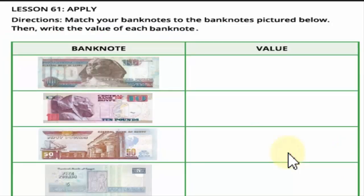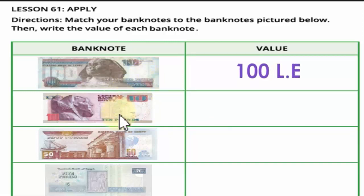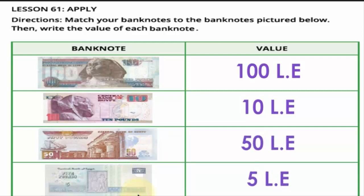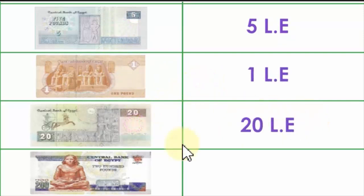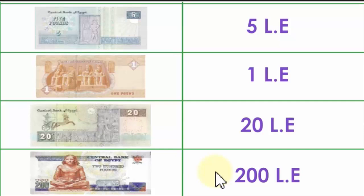Now match your banknotes to the banknote pictures below, then write the value of each banknote. The value of the first one is 100 pounds. The second one is 10 pounds. The third one is 50 pounds. The last ones are 5 pounds, 1 pound, 20 pounds, and 200 pounds. We use the two capital letters L and E to express pounds.